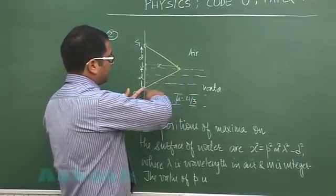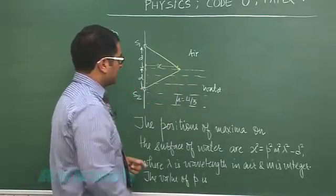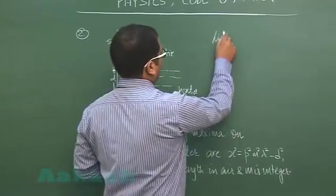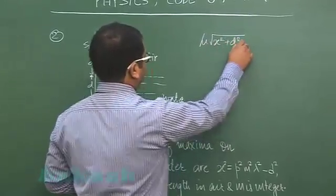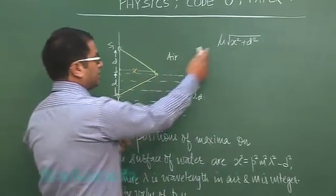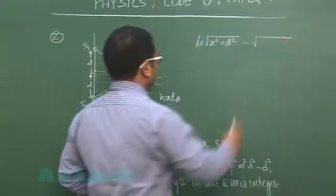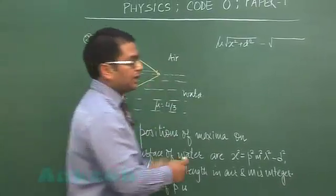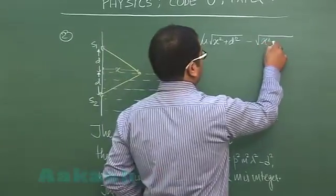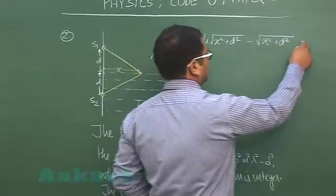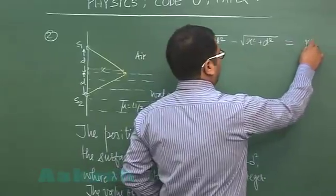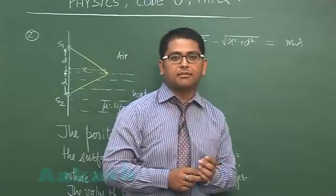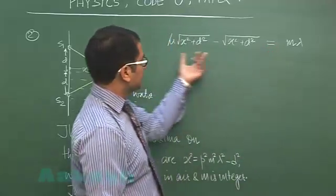The optical path length of the lower path would be mu times root of x square plus d square - the geometrical path length multiplied by mu. For the upper one, the geometrical path as well as the optical path length both are equal, and that's root of x square plus d square. So this is the path difference. For constructive interference to happen, the path difference should be plus minus m lambda, where I will not be considering the minus sign because this is already bigger than this.